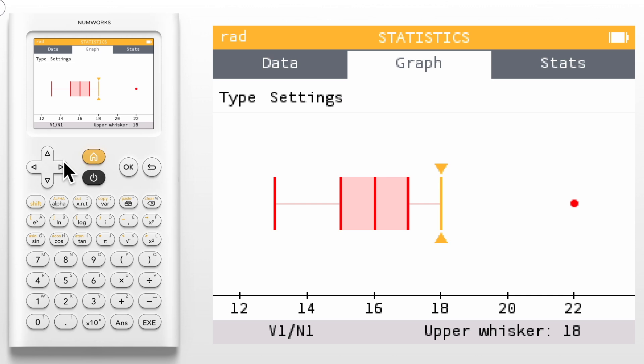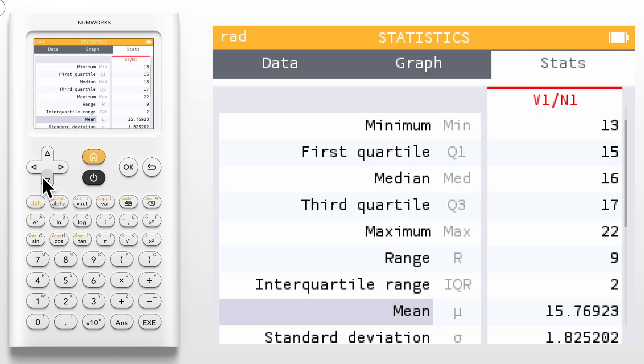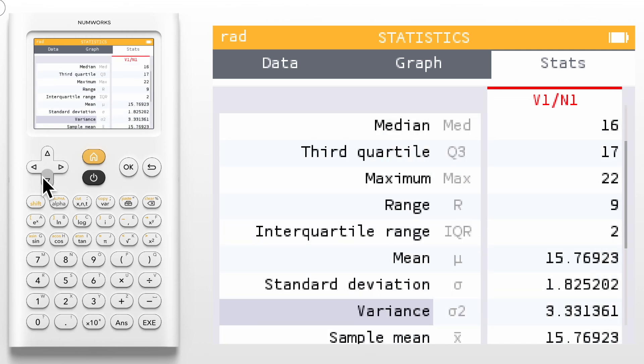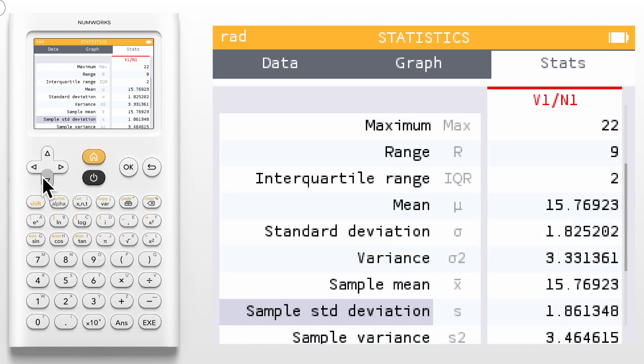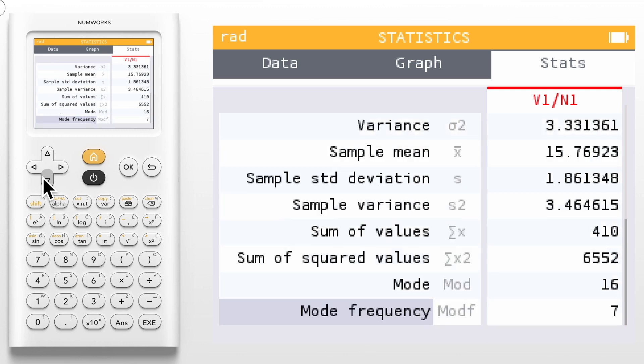Finally the stats tab provides all summary statistics for our data set and includes both the vocabulary term and the symbol. We start with the five number summary, the range, the IQR, mean, standard deviation, and variance. At the bottom of the list you will also see a mode and its frequency if one exists.